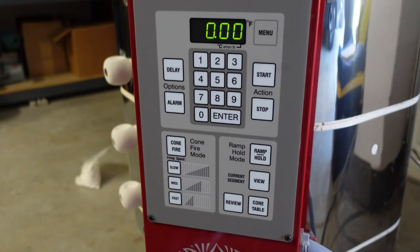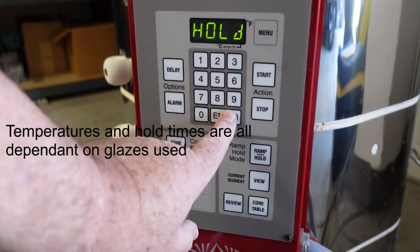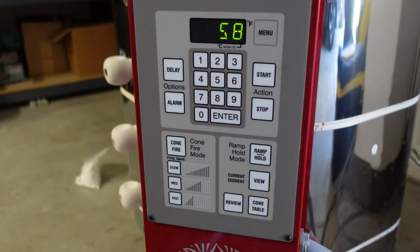Then it says hold. That means once it gets up to the temperature that you've set it for, the 04, do you want to hold it there? I just wanted to get it to 04 and stop. If you were doing a glaze firing, like I fire to cone five or cone six, you might want it to hold at that top temperature for five, ten, fifteen minutes just to make sure your glaze fully matures. But again, for a bisque firing, you don't need to do that.